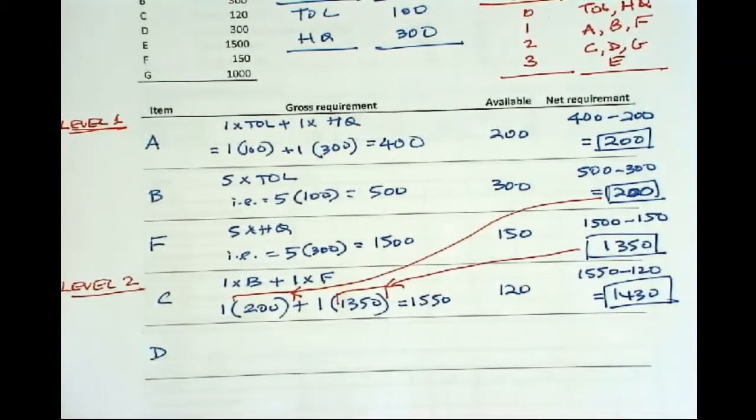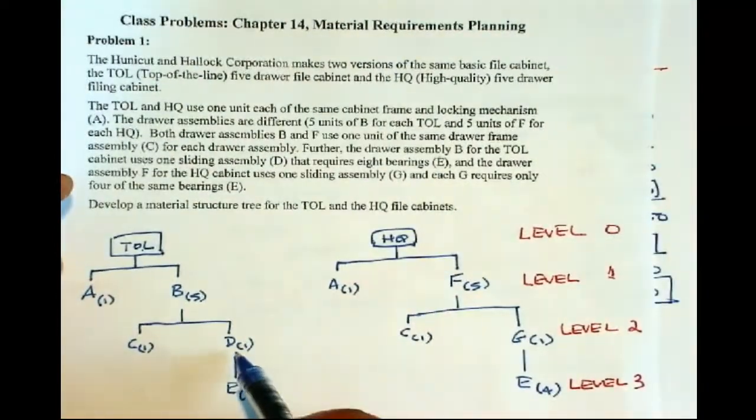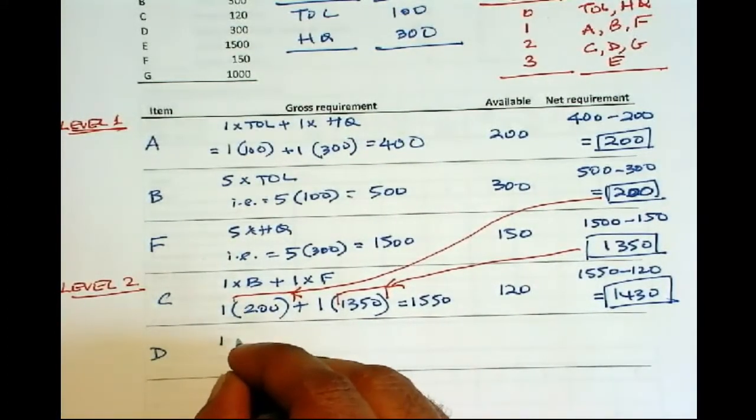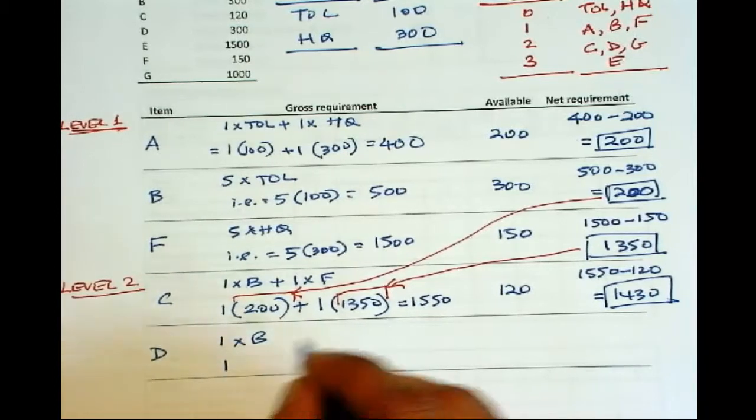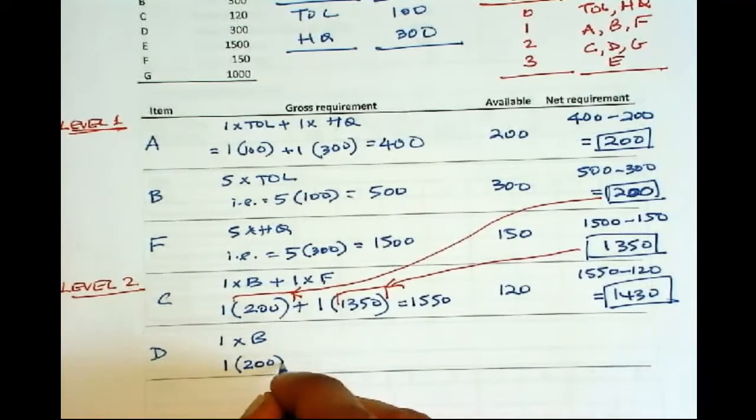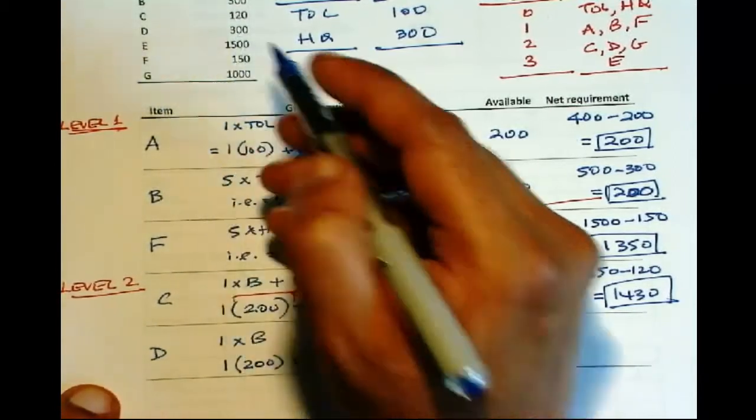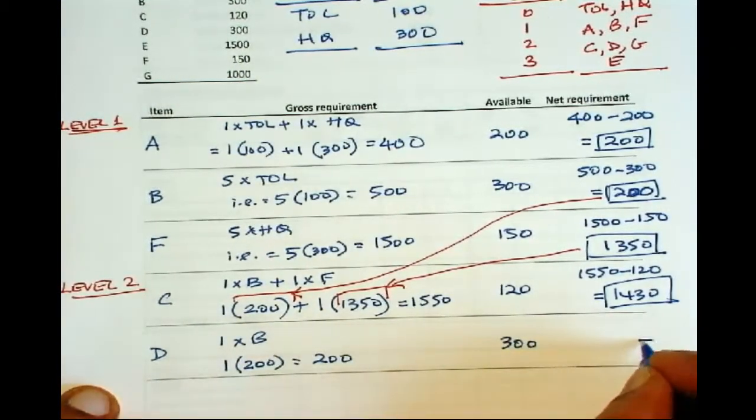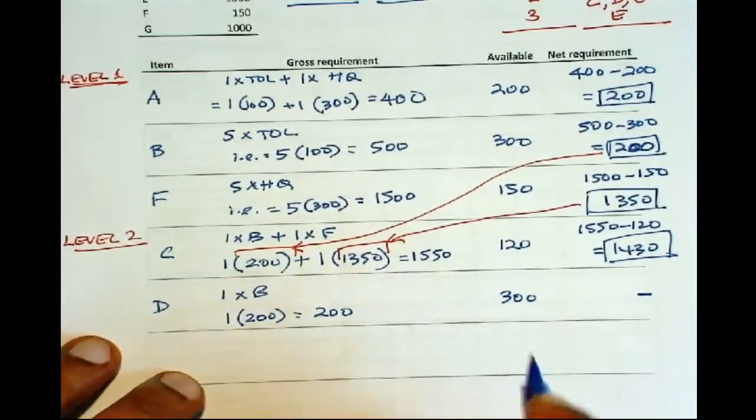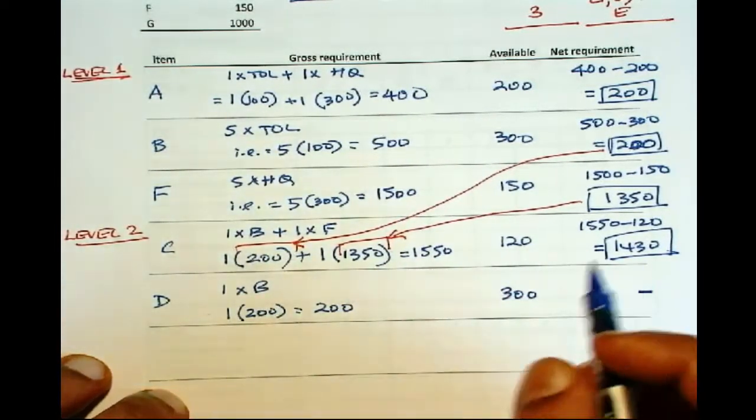Next is D. Now D is 1 unit for each B. So 1 times B, and once again, it is that 200. Don't use the gross requirement. It should be net requirement. So this 200 is 200, and we have 300 available. So there is no net requirement because this 200 gross requirement can be met with the available 300. Don't put minus 100 here. Your net requirement cannot be negative.